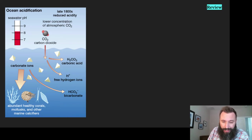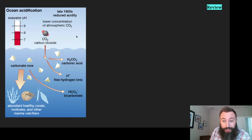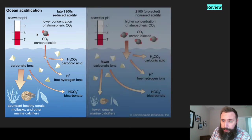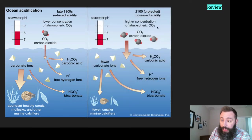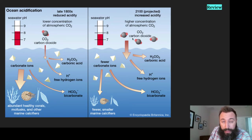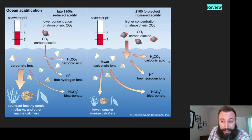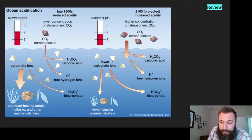Marine calcifiers include organisms like this nautilus, coral, and phytoplankton. That carbonate ion comes from dissolved carbon dioxide in the ocean. The problem is that due to anthropogenic increases of CO2 in the atmosphere — the burning of fossil fuels — we're increasing the concentration of CO2, which means more CO2 molecules dissolve into the ocean, making more carbonic acid. That carbonic acid is stealing this carbonate, making less of it available to the coral, the nautilus, and the phytoplankton.